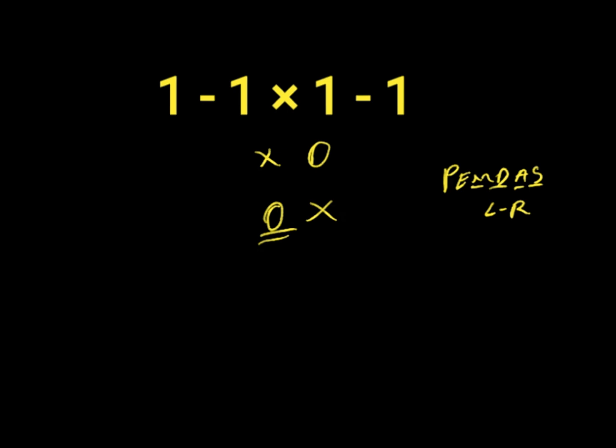Let's solve the right answer to this expression. First of all, we solve our multiplication, which is 1 times 1, because it comes first before subtraction. 1 times 1 is 1.